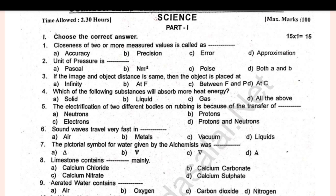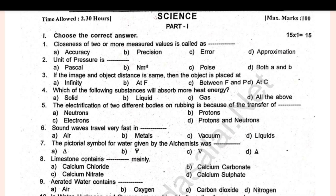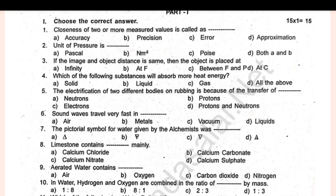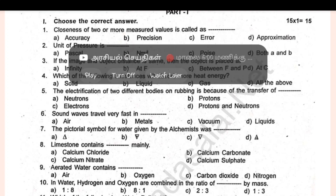Closeness of 2 or more measured values is called as dash. Sound waves travel very fast in dash. Limestone contains dash mainly. Which of the following is a water pollutant? Base is a substance that gives dash on dissolving in water.